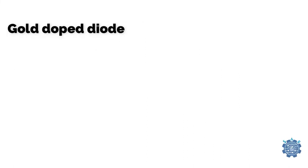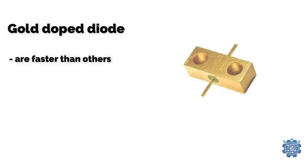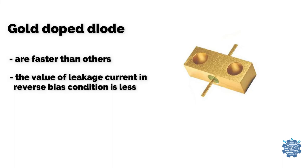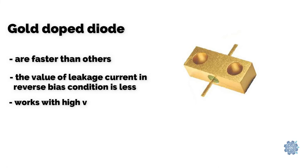Gold doped diodes are faster than others. The value of leakage current in reverse bias condition is less and they work also with high voltage drop.